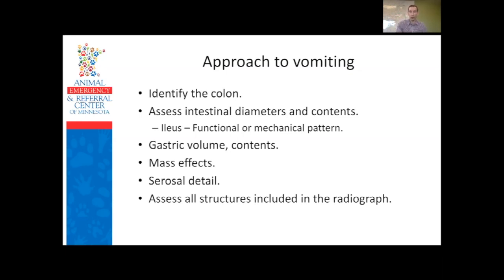Once you identify the colon you can follow it and know what is colon versus something else, since many foreign bodies mimic colon with fecal contents. Then look at diameters: is it functional ileus where everything is similarly mildly to moderately dilated, or a mechanical pattern with one severely distended segment and fairly empty segments beyond? Assess gastric volume and contents — feeding history matters here because food is often indistinguishable from cloth or stuffing foreign material. Also look for mass effects: liver size, splenic size, serosal detail.